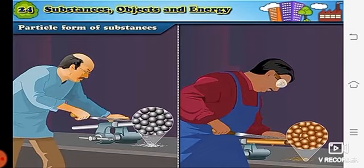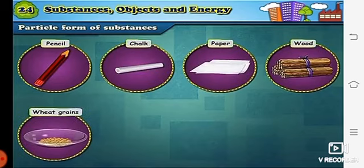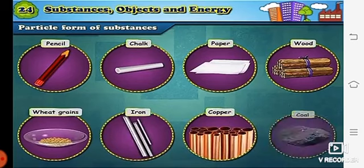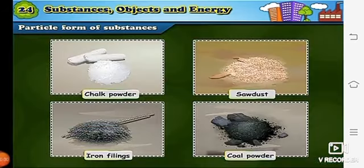When iron or copper is made smooth with a file we again get small particles of iron and copper which are falling down. They are called as filings. Substances like pencil, chalk, paper, wood, wheat grains, iron, copper, coal are made up of tiny and fine particles. The small particles of different substances that we are able to see are again made up of many tinier particles and these tiny particles are so small that we are unable to see with our eyes. They are not visible to our eyes.